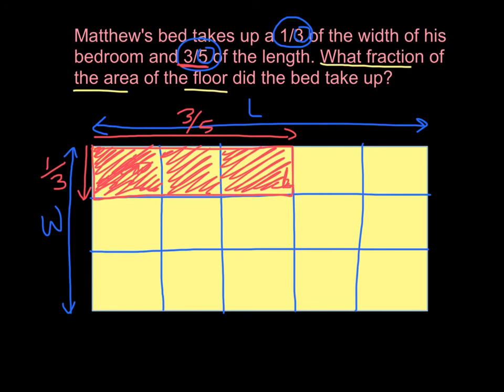Now let's see, we're asked what fraction of the area of the floor did the bed take up? So we have to use our whole room or our whole number and write the bed as a fraction of that entire number. And we can see that we started with 15 pieces of our area of our floor and we have shaded in for our bed 3. So our fraction is going to be 3 over 15. And there's our answer, three-fifteenths of the area of the floor the bed took up.